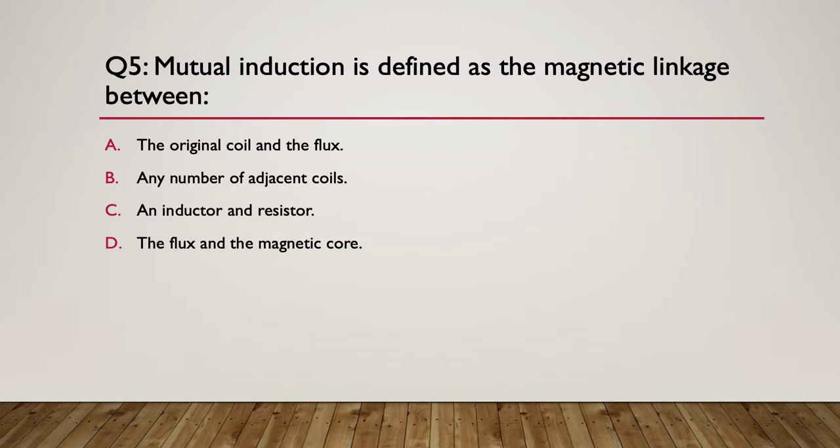Question 5: Mutual induction is defined as the magnetic linkages between what? A. the original coil and the flux, B. any number of adjacent coils, C. an inductor and a resistor, or D. the flux and the magnetic core. So A, B, C, or D, pause here.